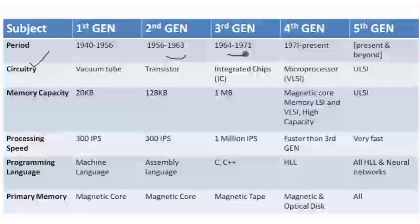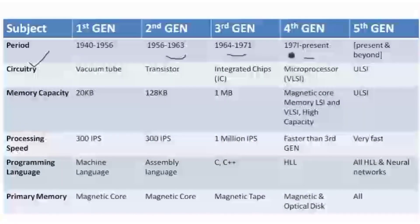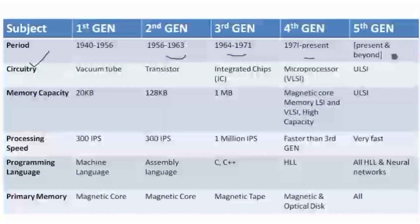In the third generation it is 1964 to 1971. The fourth generation is the present generation, running from 1971 to present. The fifth generation covers now and future computers — all upcoming computers will belong to the fifth generation.